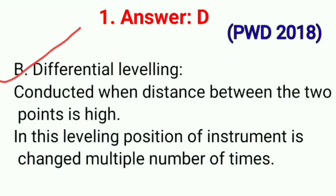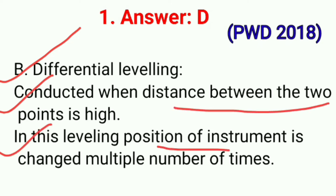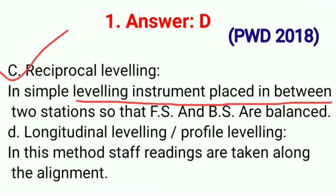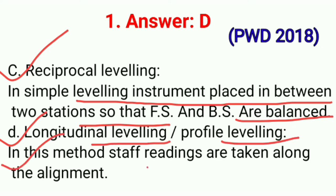Differential leveling is conducted when distance between the two points is high. In this leveling, position of instrument is changed multiple number of times. Option C is Reciprocal leveling. In simple leveling, instrument is placed in between two stations so that foresight and backsight are balanced. Option D is Longitudinal leveling or Profile leveling — in this method, staff readings are taken along the alignment.